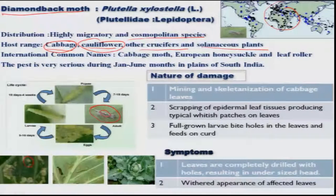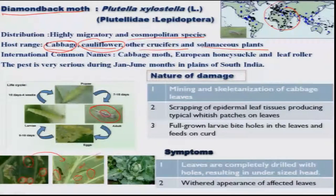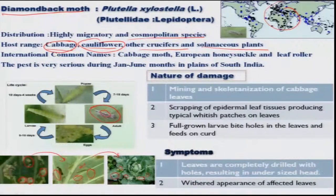As a result, you start getting white patches or blotches on the leaves. After the first instar, the larvae come out and start scraping the chlorophyll content on the leaf, resulting in white papery patches. Later instar larvae make small irregular holes on the leaves which coalesce into complete defoliation. In severe cases, they also attack the head region, resulting in a huge yield reduction.